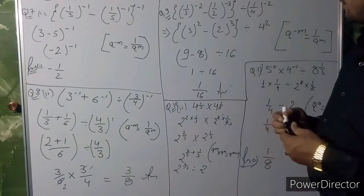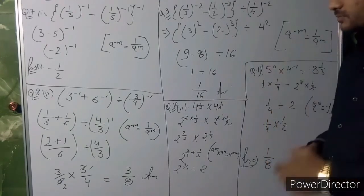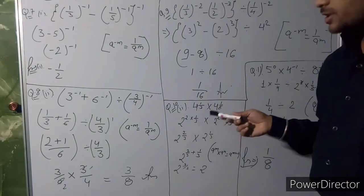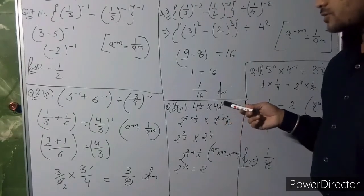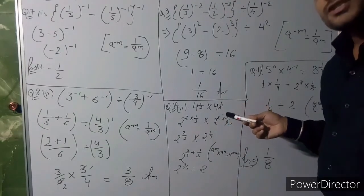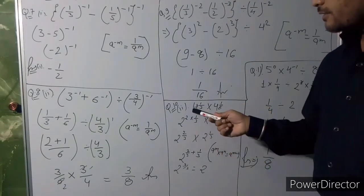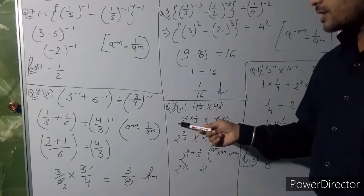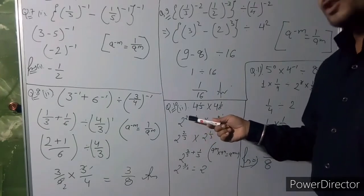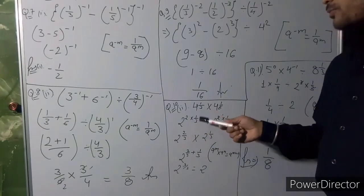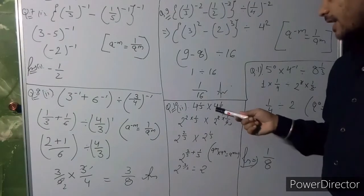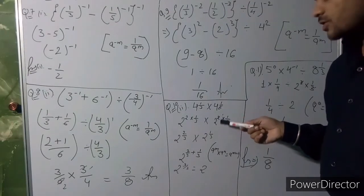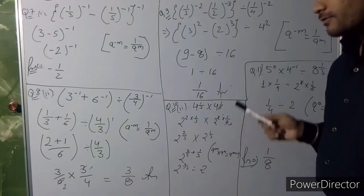Next: 4^(1/3) into 4^(1/6). We can write 4 as 2 raised to the power 2, so the expression becomes 2^(2×1/3) into 2^(2×1/6).